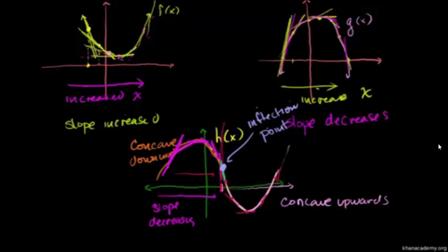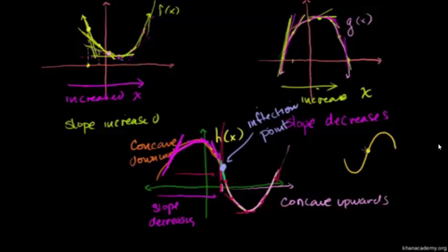This would also be called an inflection point if it was the other way — if we went from concave upwards and then concave downwards. The point at which you switch from one to the other — essentially where the rate of change of slope changes sign — that is an inflection point. Hopefully you understand visually what concave upwards and concave downwards means at an inflection point. But what does this mean for the second derivative? Remember, the derivative is the rate of change.